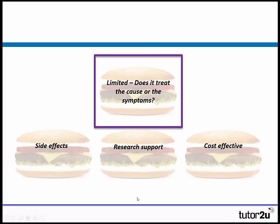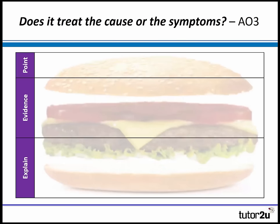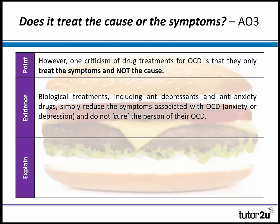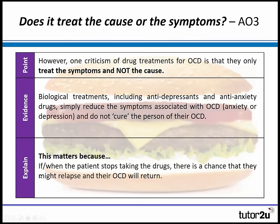Last evaluation point — does it treat the cause or just the symptoms? One criticism of drug treatments for OCD is that they only treat the symptoms and not the cause. Biological treatments including antidepressants and anti-anxiety drugs all do is reduce the symptoms associated with OCD — anxiety or depression — without actually curing the person. If the person stops taking the drugs, there's a good chance they'll relapse and their OCD returns, so we've not solved the problem at all.